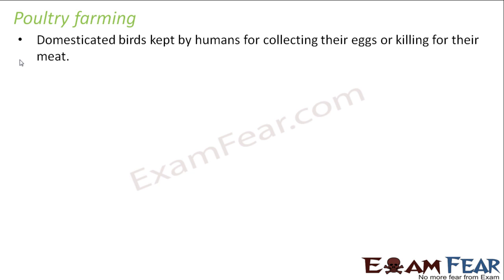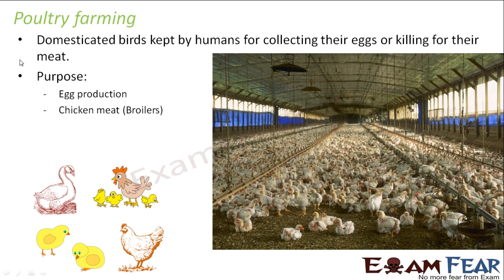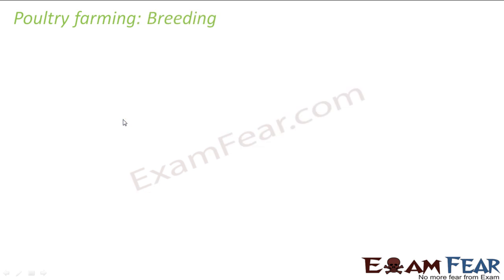People feed on chicken meat as well as eggs laid by birds like ducks and hens. Some domesticated birds shown here include the hen, chicks, and duck. Their purpose is egg production and chicken meat. Chicks raised for meat are known as broilers.